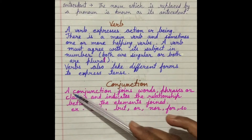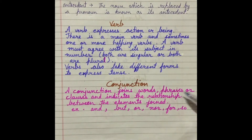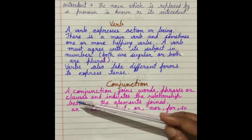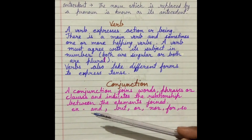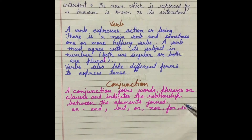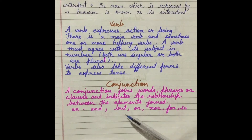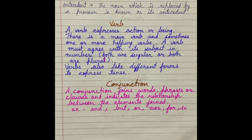Next is conjunction. A conjunction joins words, phrases, and clauses and indicates the relationship between the elements joined. Jo conjunction hota hai woh words ko bhi jodta hai, phrases ko bhi, aur kabhi-kabhi clauses ko bhi — aur yeh indicate karta hai relationship, jinhe joda gaya hai unka kya relation hai. Some conjunctions are: and, but, or, nor, for, so — and we will see in detail when we read about conjunctions.